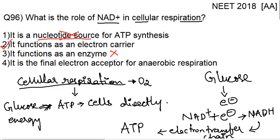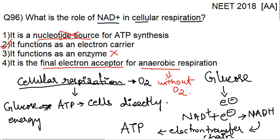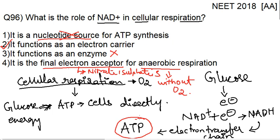Option 4: it is the final electron acceptor for anaerobic respiration — anaerobic respiration is where oxygen is not required. No, NAD plus is not the final electron acceptor for anaerobic respiration. In anaerobic respiration, the energy present in glucose is converted to the usable form ATP without the utilization of oxygen. So our answer is option number 2: it functions as an electron carrier.